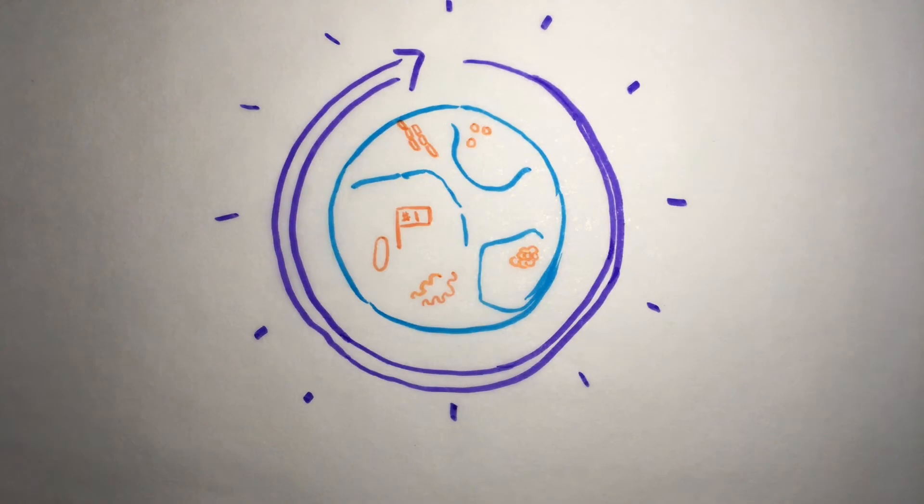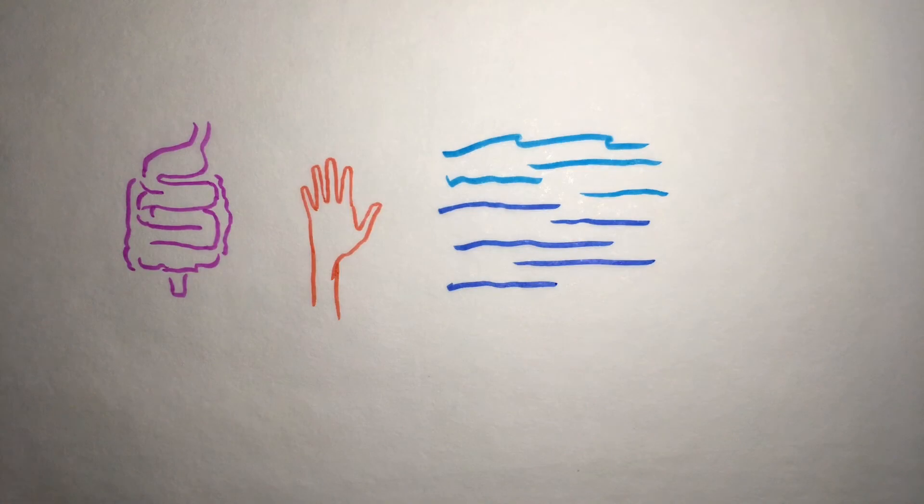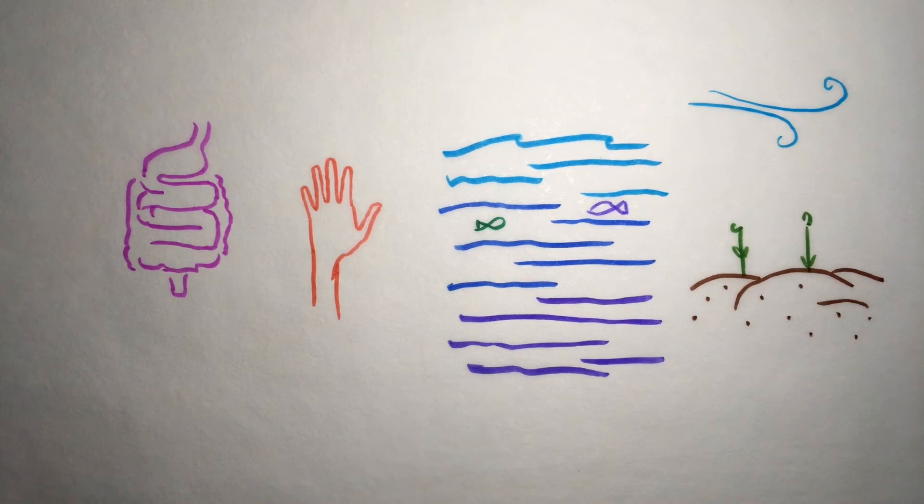Prokaryotes are in the soil, in the air, deep in the sea, in our guts, on our skin. In fact, there are more bacterial cells living in and on your body than there are human cells.